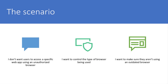Here's the situation. This is where you don't want users to use a specific browser — maybe Internet Explorer or the Tor browser or whatever — to be able to access a web application. You want to control the type of browser being used, maybe by version or by type, and also make sure they're not using an outdated version of the browser that might be unpatched and unsafe.